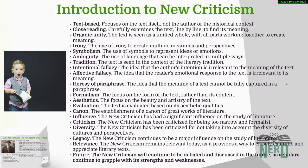T.S. Eliot, another heavyweight in the world of literature, also played a significant role in New Criticism. He came up with the theory of impersonality, which basically says that the poet's personality shouldn't overshadow the poem itself. He also gave us the concept of the objective correlative — a way of expressing emotions through objects and events in a story or poem, like using symbols to convey feelings. He also had strong opinions about other poets — he wasn't too keen on Milton and Dryden, but had a soft spot for the metaphysical poets, really shaping the New Criticism canon with his evaluations.